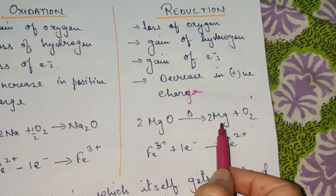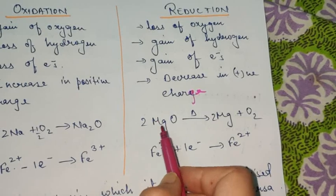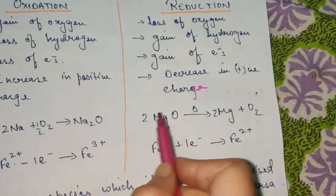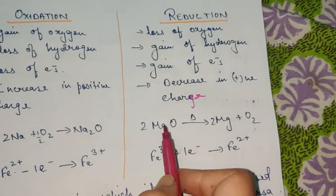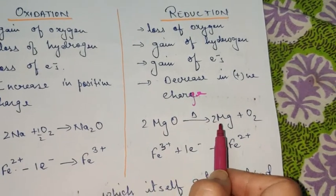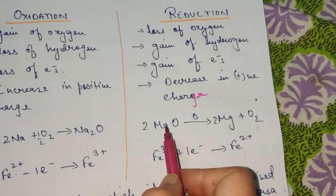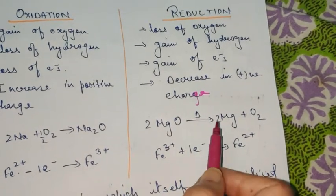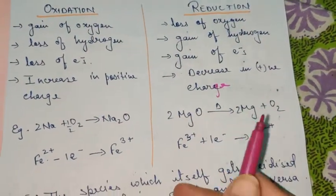Now see this — MgO is getting converted into Mg. That means MgO is losing oxygen. Loss of oxygen means this is reduction.